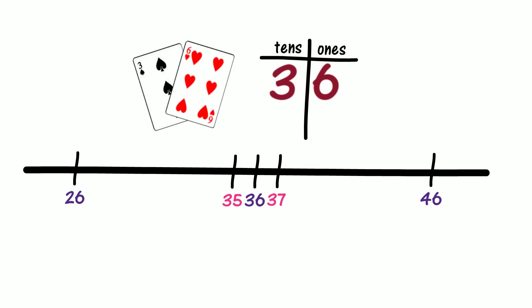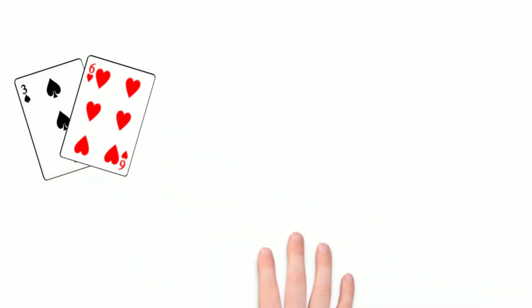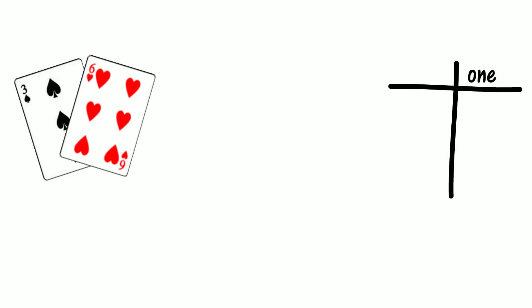Let's select two cards to make a two-digit number. What number did we make? Did we make 36? Let's record 36 in a place value chart. How can we describe 36 using standard place value? Is 36 three tens and six ones?